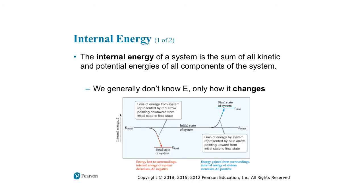The internal energy of the system is the sum of all the kinetic and potential energies of all the components in the system. Generally, this is relatively hard to know in an absolute sense, so a lot of times we try to calculate the change in energy between our initial and final state — calculating delta E as final minus initial. Some reactions go downhill in energy, others go uphill, and both types can occur.